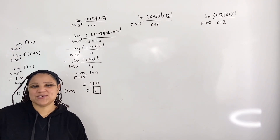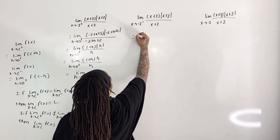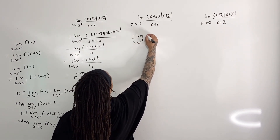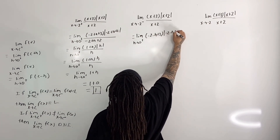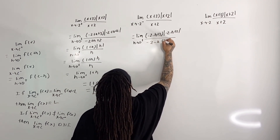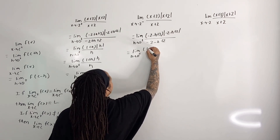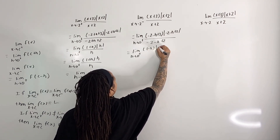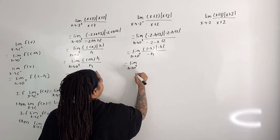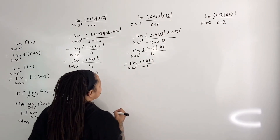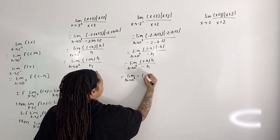For the next example, x is approaching negative 2 from the left. This equals the limit as h approaches 0 from the right of (negative 2 minus h plus 3) times the absolute value of (negative 2 minus h plus 2) all over (negative 2 minus h plus 2). This simplifies to the limit as h approaches 0 from the right of (1 minus h) times the absolute value of negative h all over negative h. We get a cancellation, giving the limit as h approaches 0 from the right of negative 1 minus h.